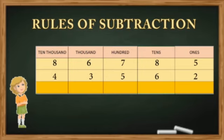We start with the ones column: 5 ones minus 2 ones gives 3 ones. Then the tens: 8 tens minus 6 tens gives 2. Then the hundreds column subtraction gives 2. In the thousands column, 6 minus 3 gives 3. Then ten thousands: 8 minus 4 gives 4. So the difference is 43,223.